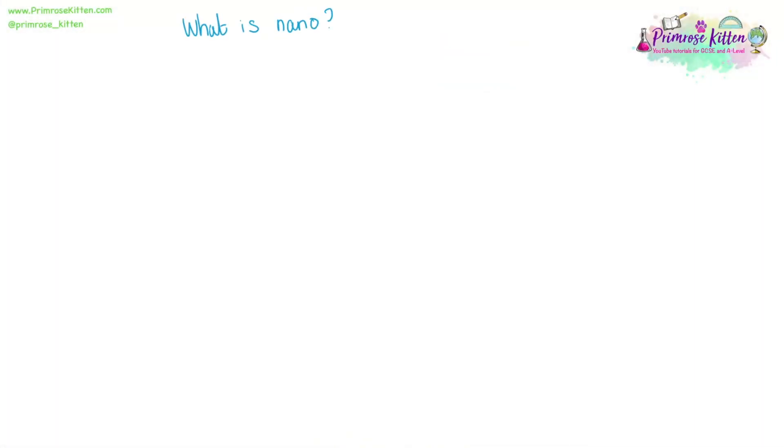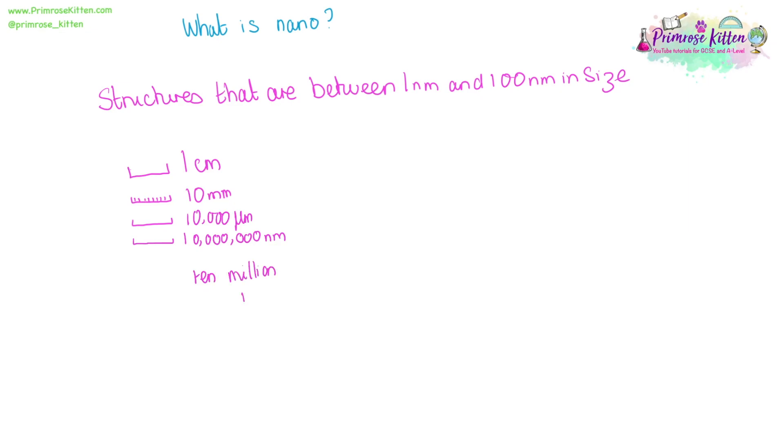Nanoparticles might be a term you've not come across before, so it's worth trying to get an idea in your head of just how small nano is. Nanoparticles, nanostructures, are between one nanometre and a hundred nanometres in size. Here we have one centimetre. In that, we have 10 millimetres. These are the divisions you should be able to see on your ruler. In that same space, we have 10,000 micrometres and in that same one centimetre, we have 10 million nanometres. So if we're talking about structures that are one to a hundred nanometres in size, they are very, very small. If you try to envision 10 million nanometres being in that one centimetre, it is incredibly small.